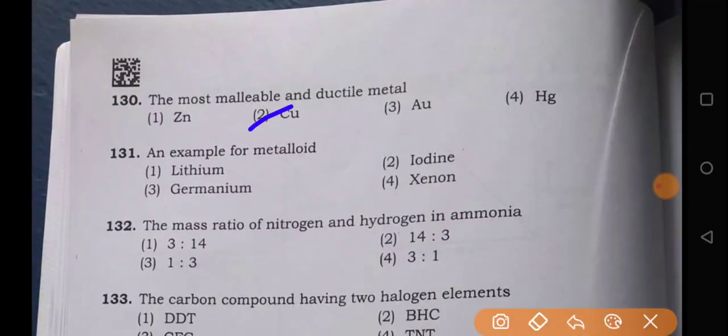Most malleable and ductile is copper, that's why we use it in houses. Metalloids are germanium and silicon as examples. Here, you must note it's mass ratio, not element ratio. Element ratio would be 1:3, but here the answer is 14:3.